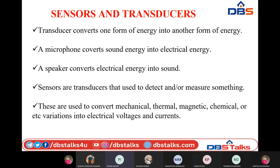A transducer is a device that converts any physical, mechanical, magnetic, or chemical parameters into electrical voltages and current. There is only a slight variation between sensors and transducers — sensors are used only to detect or sense something, they measure something and give their output to some other device, whereas a transducer converts that input into another form of electrical energy. This is the basic difference between sensors and transducers.